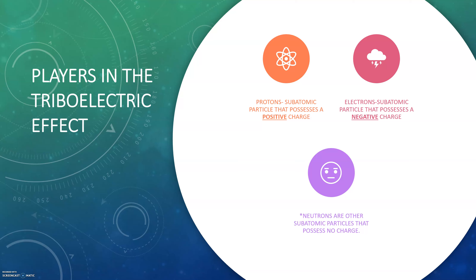The players we have in the triboelectric effect are protons and electrons. These are both subatomic particles that possess charges. The proton has a positive charge and the electron has a negative charge — equal in magnitude but opposite. We also talk about neutrons, but the neutron is just a subatomic particle that has no charge. So in this video, we're going to focus on how protons and electrons interact, and not so much on neutrons.